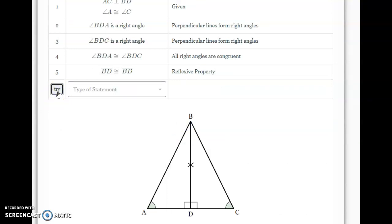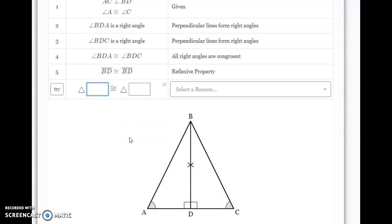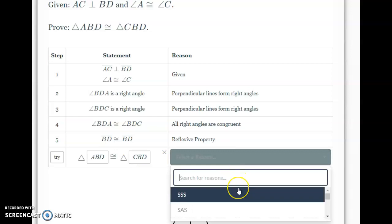Notice that it also labeled this on my diagram for me. So, now I have angle angle side and angle angle side. And my last statement can be that these triangles are congruent. So, triangle ABD is congruent to triangle CBD, and my reason is AAS, angle angle side.